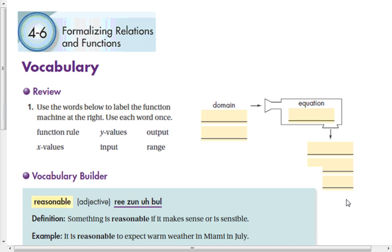Hey students, this is lesson 4-6. In this lesson we're going to learn how to determine whether a relation is a function, and to find the domain and range, and to use function notation. Go ahead and do the review here. Some really important terms for you to think about.